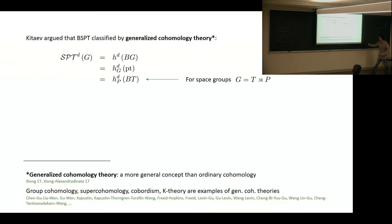These examples which we see in physics, like group cohomology, group supercohomology, and also cobordism, K-theory, which is used in topological insulator classification, they are all examples of generalized cohomology.